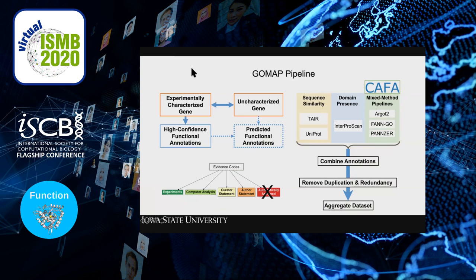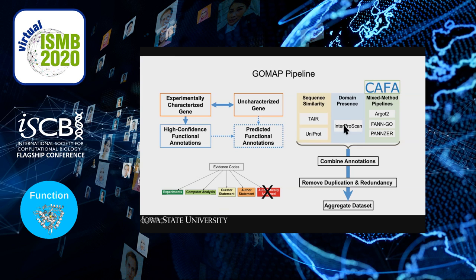We put together a pipeline with this rationale: for inputs to our GoMap pipeline, we used only experimentally-supported evidence codes, throwing out anything automatically assigned. We included several methods for functional prediction: simple sequence similarity from TAIR and UniProt, domain information from InterProScan, and mixed-method pipelines from the first CAFA — Argot II, FANGO, and Panzer — which performed among the best in CAFA and were available for external use.